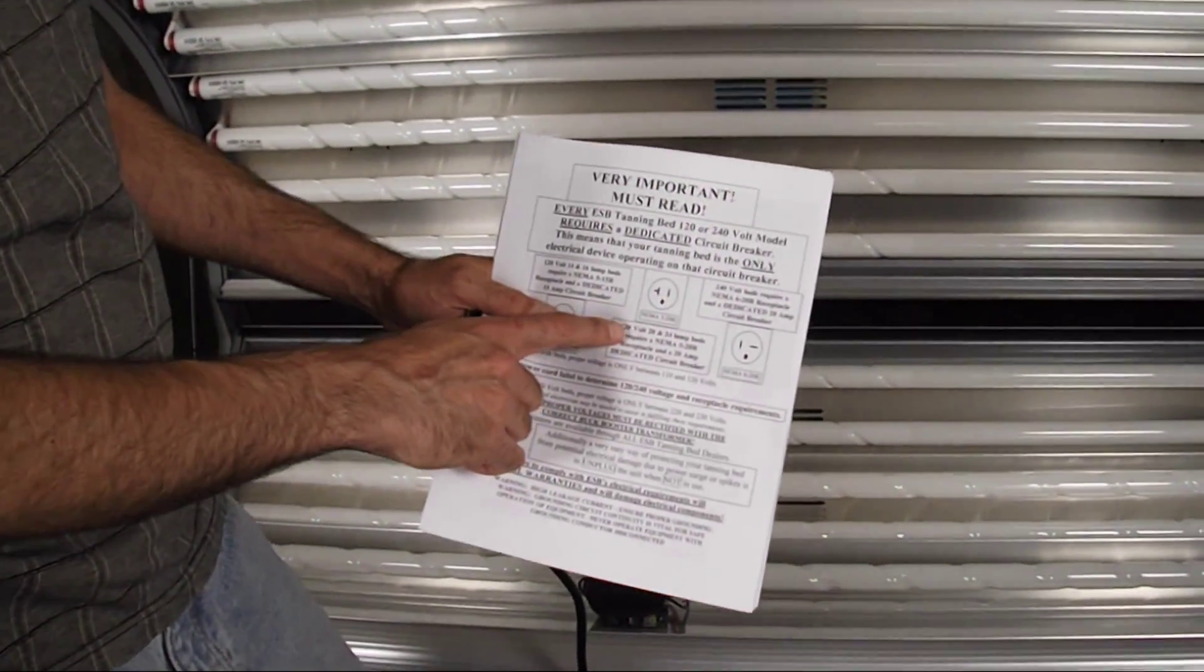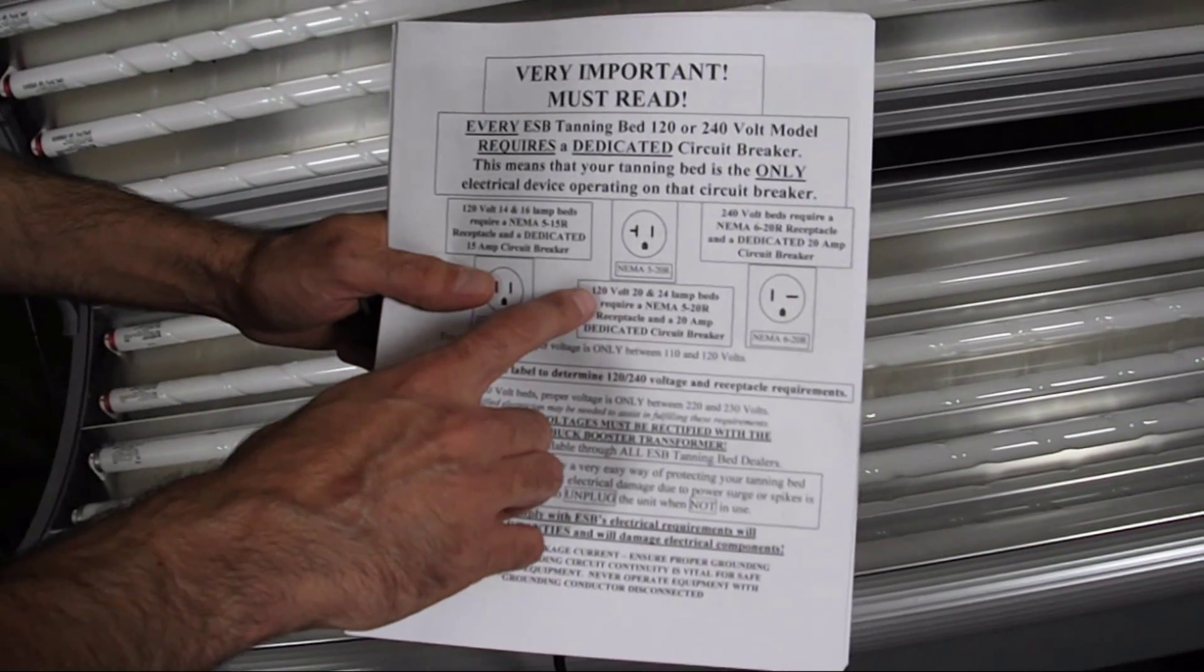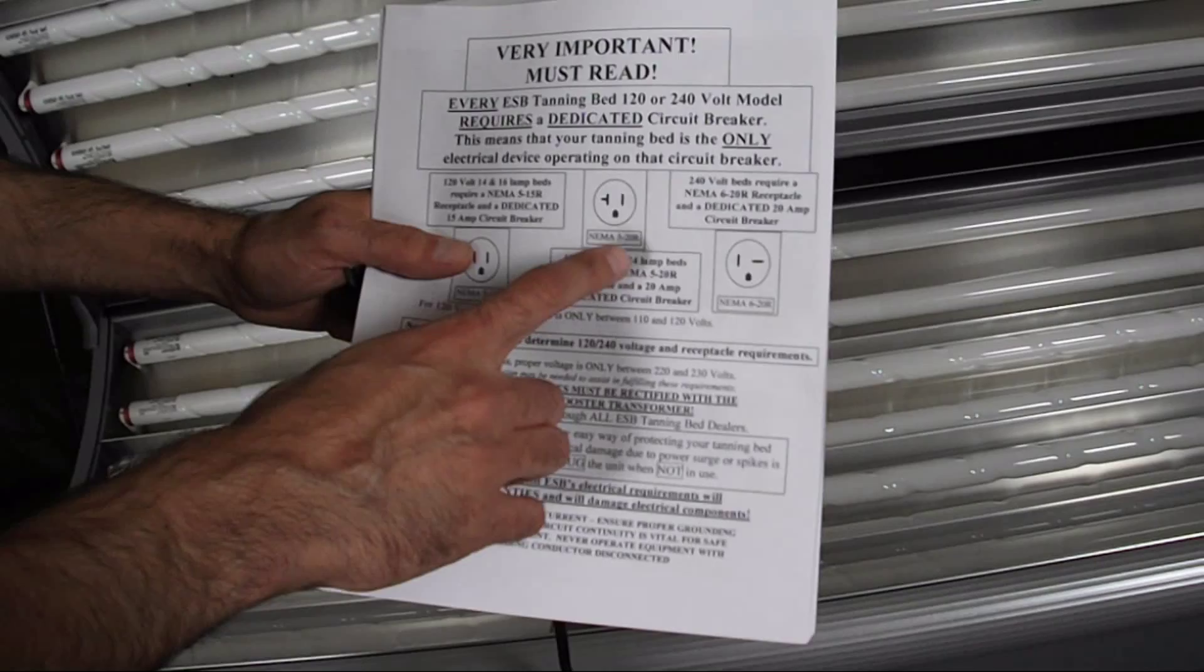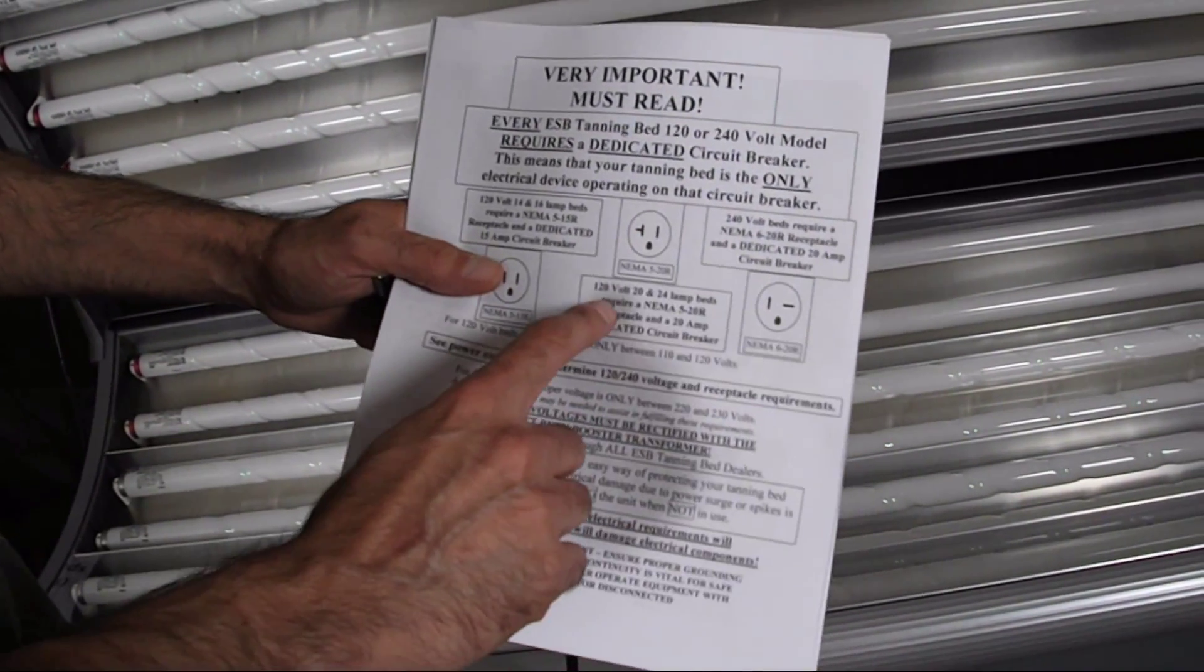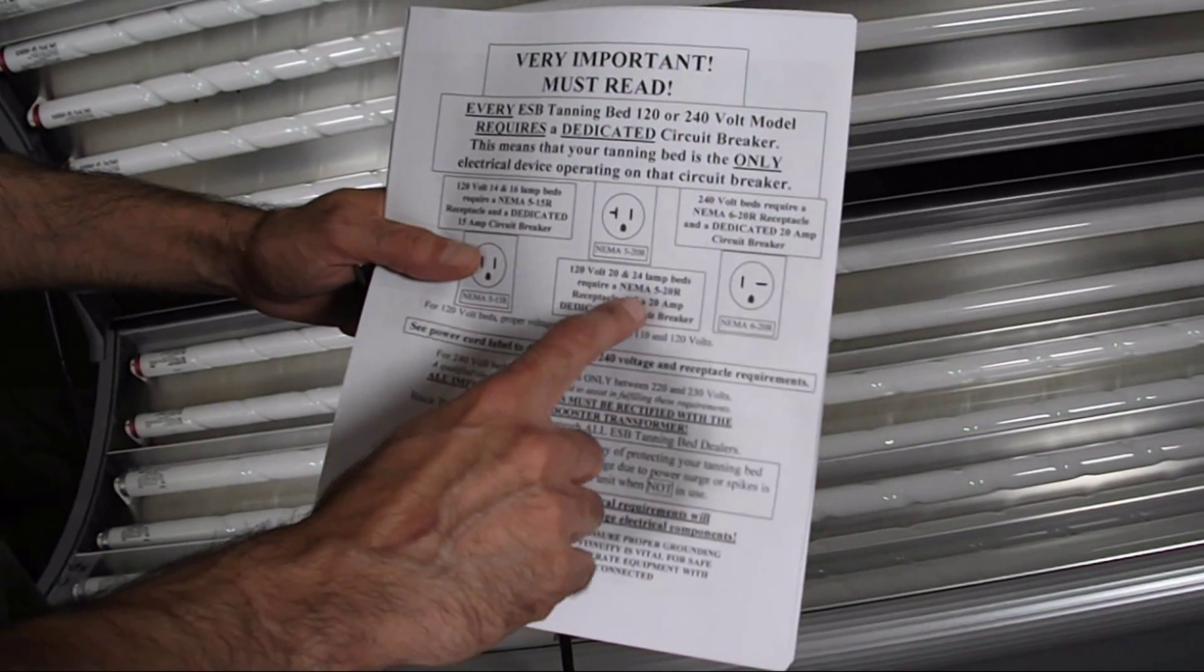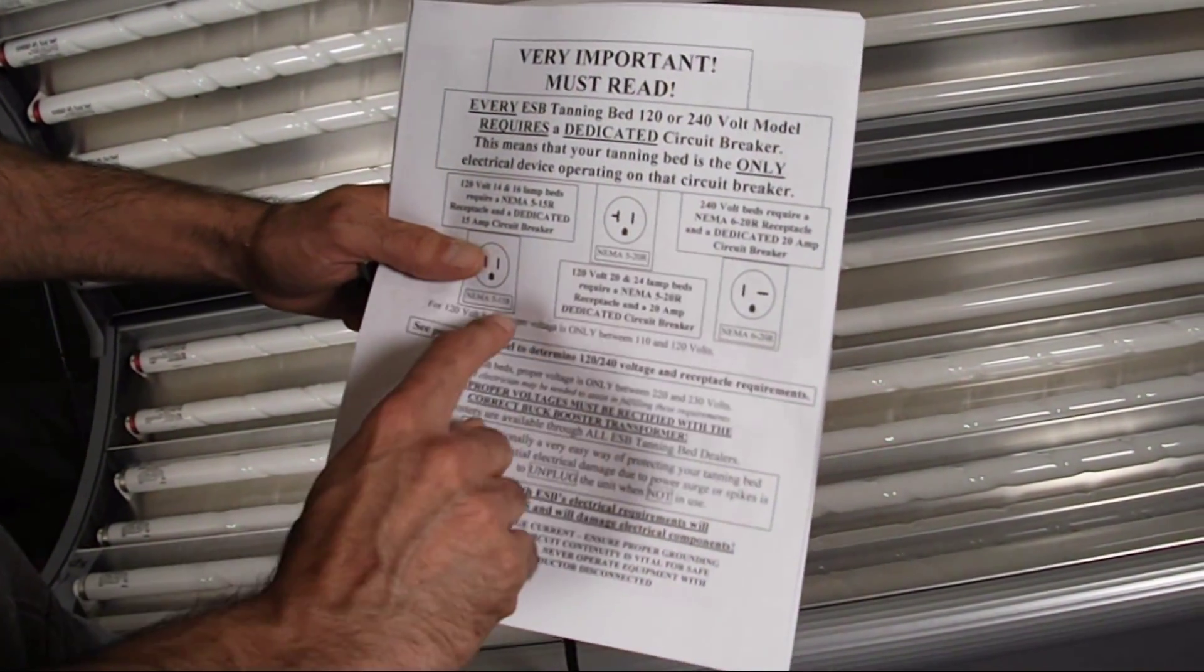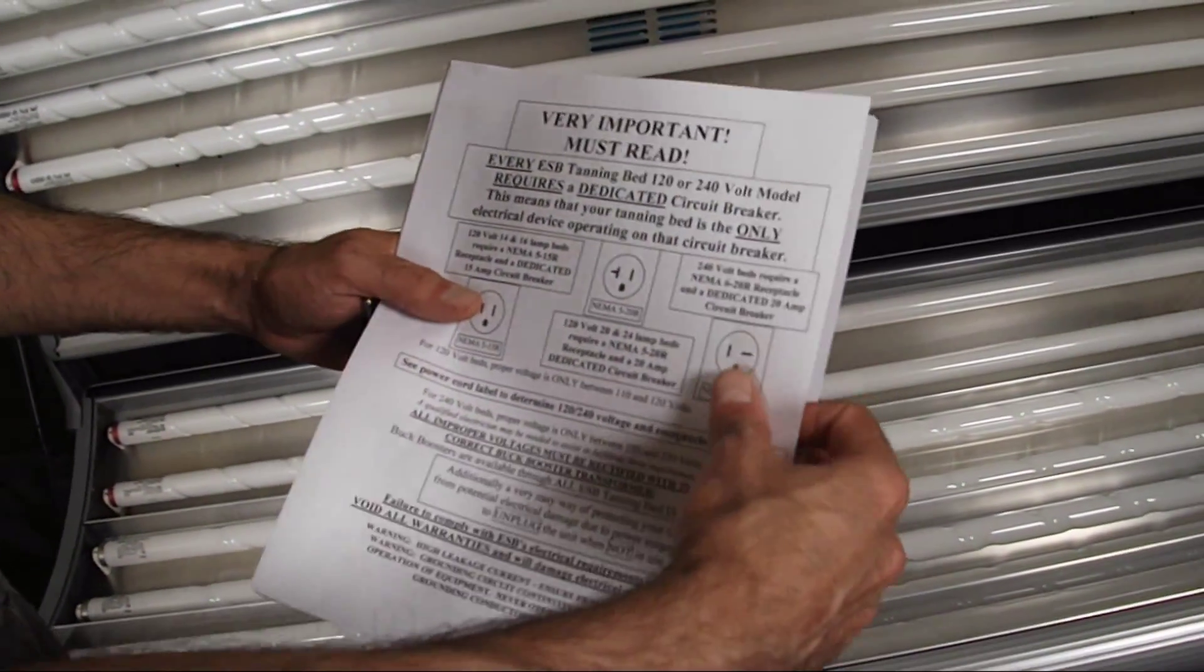Most of the beds will require this, the NEMA 5-20R. This is 120 volt, 20 and 24 lamp beds. There are other configurations that have this type of a plug though, and those require, this is a 20 amp plug, 120 volt, and it would require a 20 amp dedicated circuit breaker just the same.